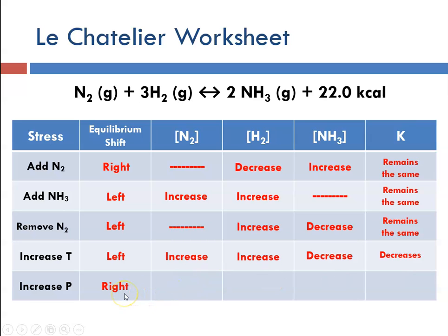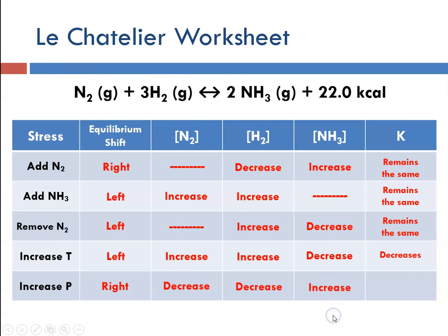If we increase the pressure, it's going to shift things to the right. On the reactant side we have 1 plus 3 — 4 moles — and on the product side we only have 2 moles. Shifting toward the right reduces the number of moles of gas, which reduces the pressure. So the equilibrium shifts right, meaning reactant concentrations will decrease and product concentration will increase. Remember that changes in pressure do not change the value of Keq.